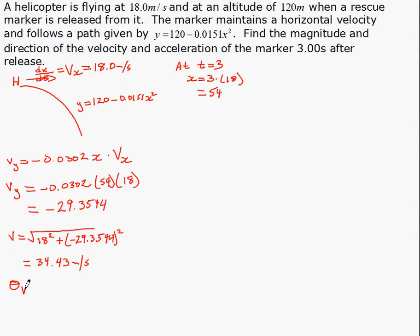And the direction is the tan inverse of negative 29.354. As I'm writing this, just think to yourself, the y is negative, which means, and the x is positive, which means quadrant 4. So once we take the tan inverse, the answer is going to be negative, which means we add 360 to our answer to make it positive, so we get 301 degrees. So there's the velocity, direction, magnitude.